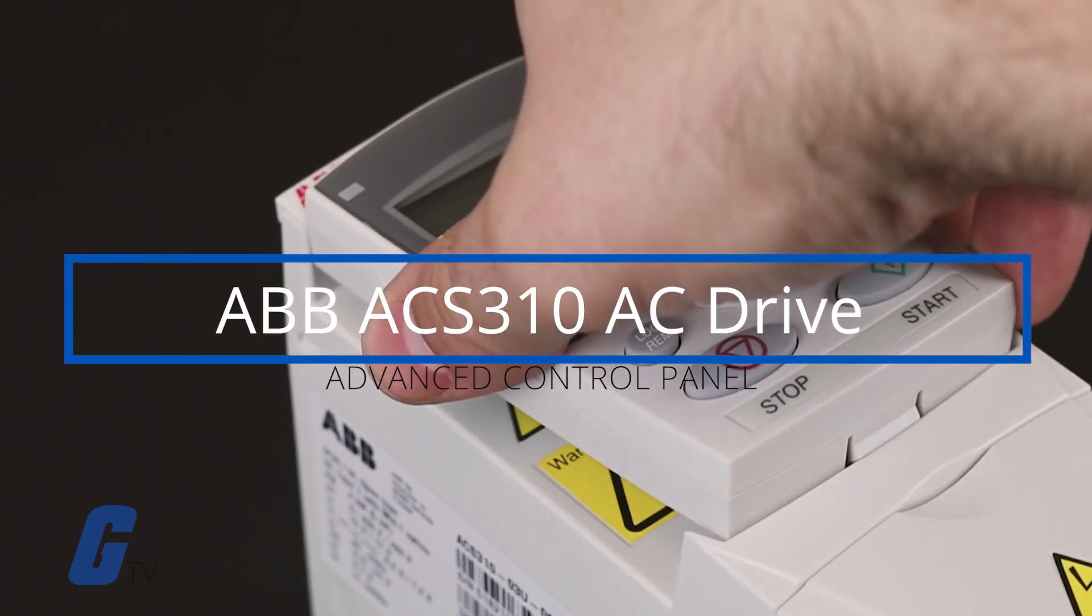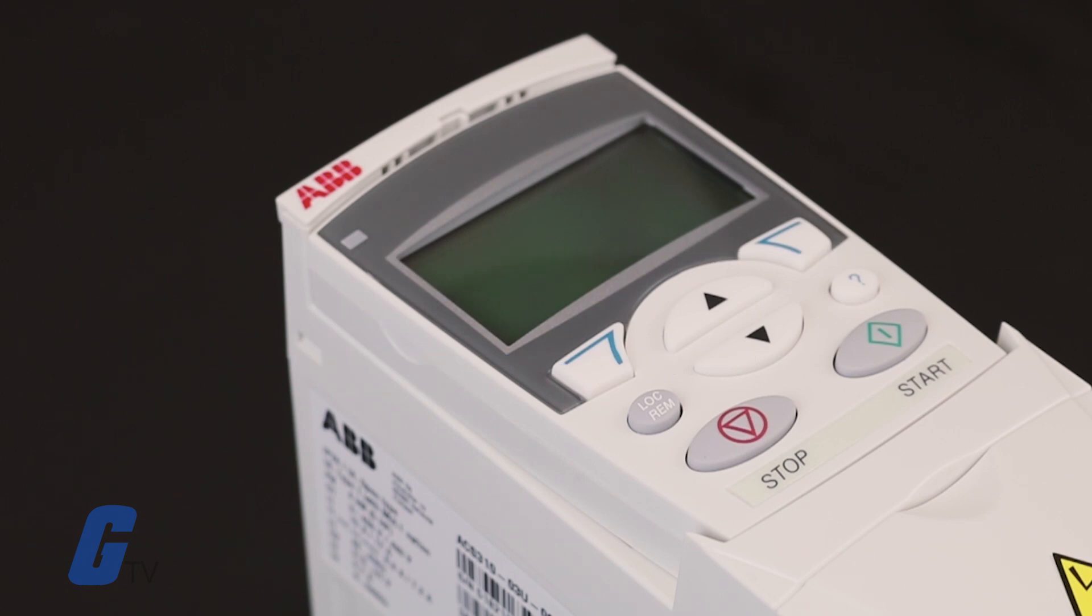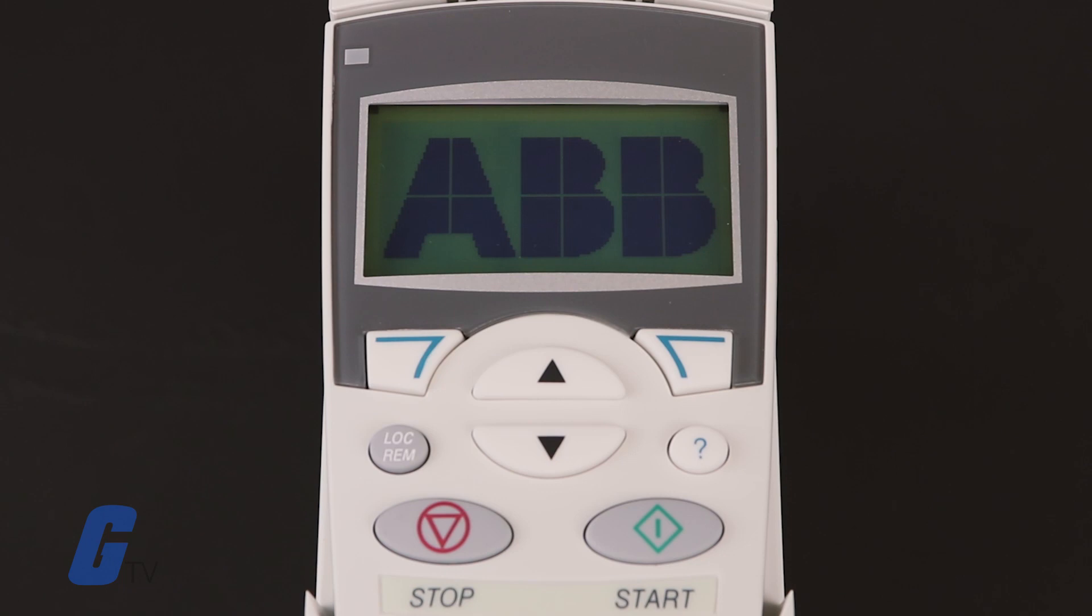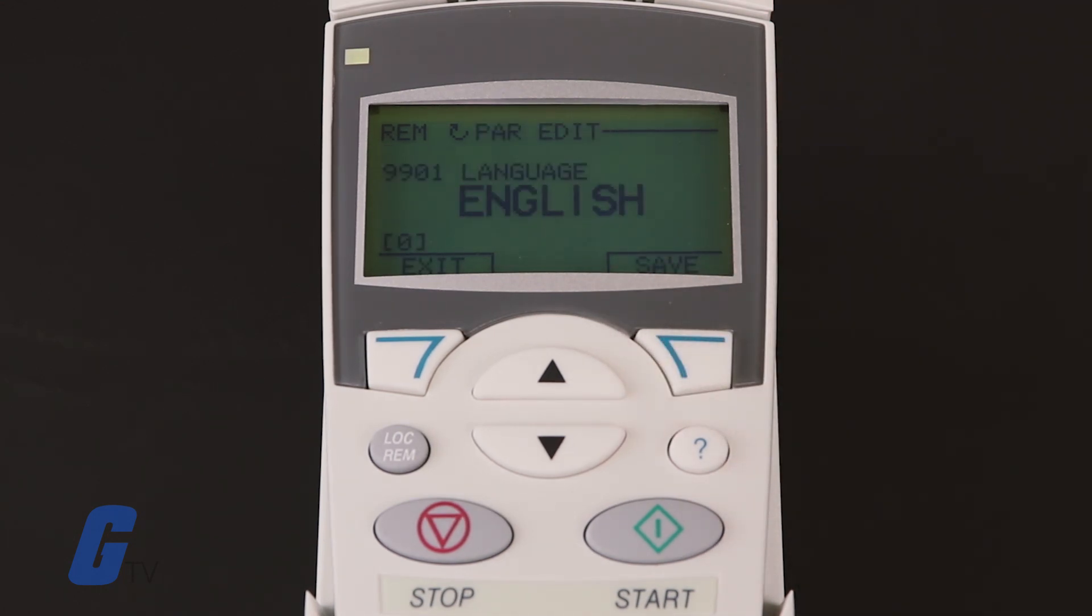A guided startup of the ACS 310 using the assistant requires the advanced control panel shown here. Begin by applying power to your drive. Upon boot up, the display will ask if you'd like to run the startup assistant. Select yes to begin. It will now ask for your preferred language. Use the up and down arrow keys to select your desired language and press the save key to confirm.